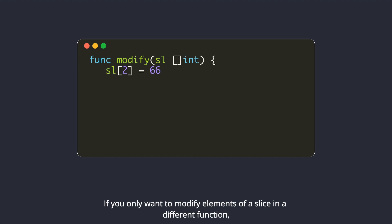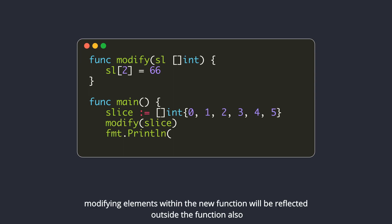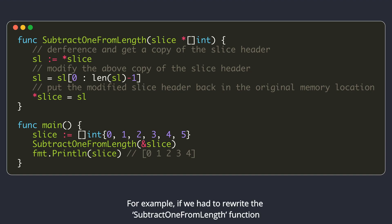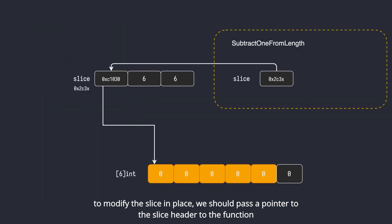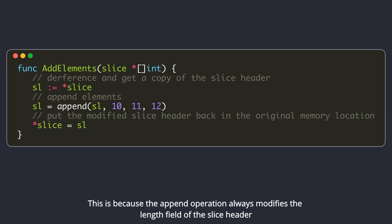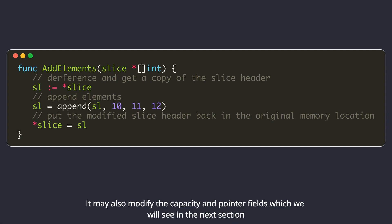If you only want to modify elements of a slice in a different function, you only need to pass the slice variable directly. Since it points to the same underlying array, modifying elements within the new function will be reflected outside the function also. However, if you want your function to modify the slice header, you should pass a pointer to the slice to the function. For example, if we had to rewrite the subtract-one-from-length function to modify the slice in place, we should pass a pointer to the slice header. The same is true if you are doing an append operation in the called function and want to persist the changes, because the append operation always modifies the length field of the slice header. It may also modify the capacity and pointer fields.